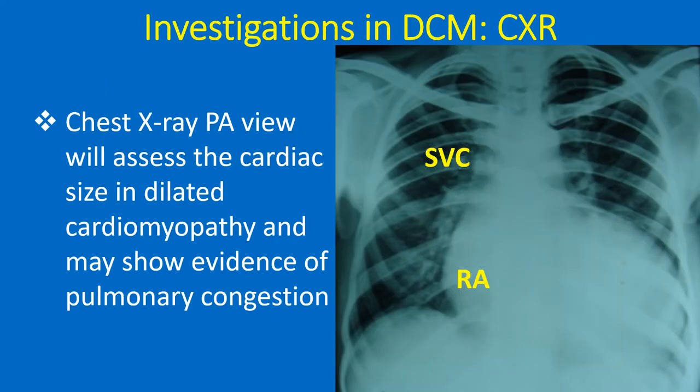Cardiomegaly on chest X-ray in dilated cardiomyopathy: the cardiothoracic ratio is increased and the right border is shifted to the right, indicating right atrial enlargement. Superior vena caval shadow is seen upwards from the right atrial contour, indicating a congested superior vena cava. Sick patients may present with features of frank pulmonary edema in the form of hilar haze or batwing pattern. Significant left ventricular dysfunction can exist without much cardiomegaly on chest X-ray as well.